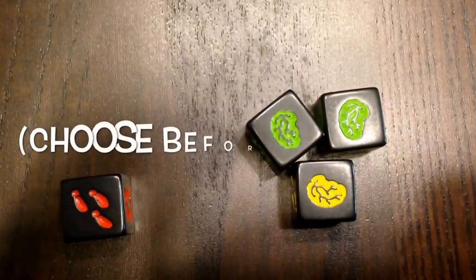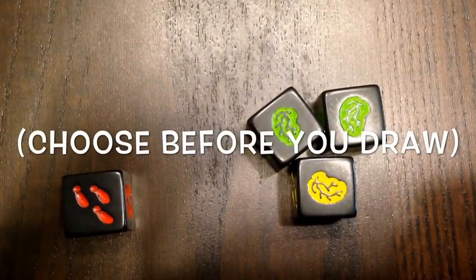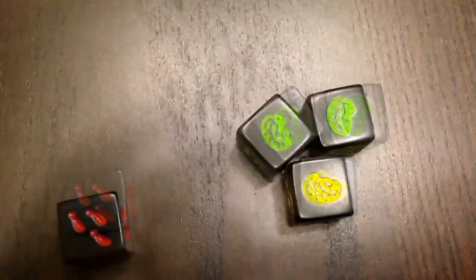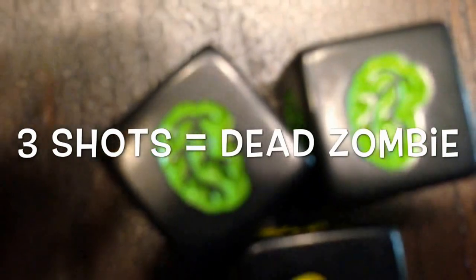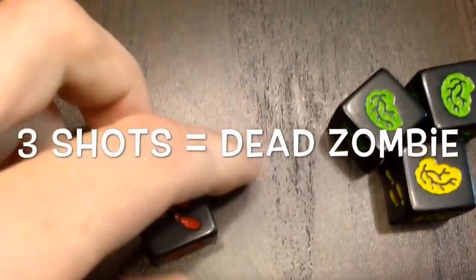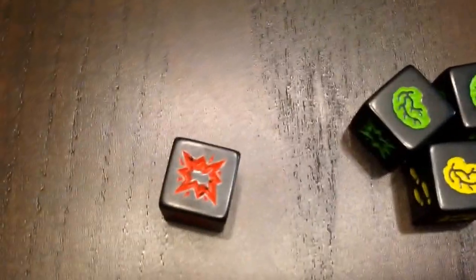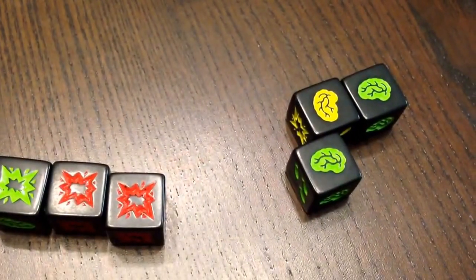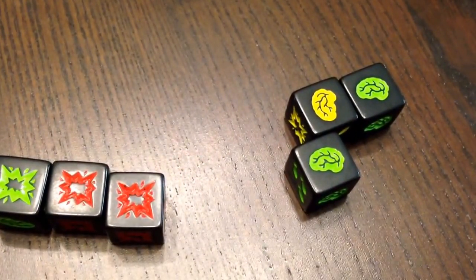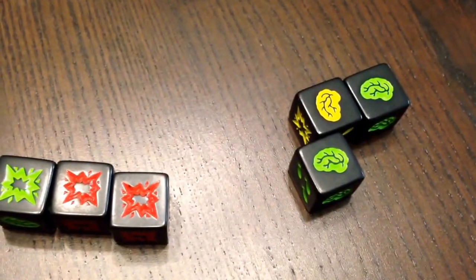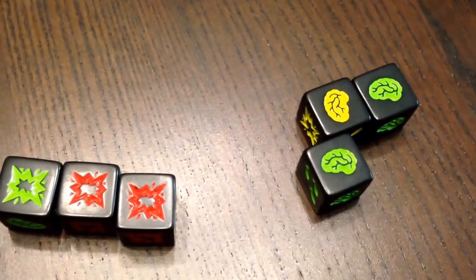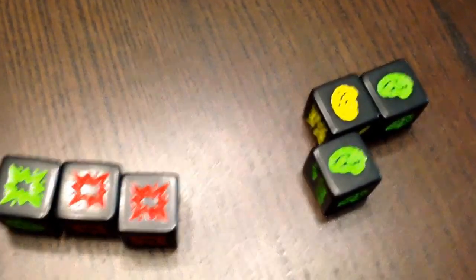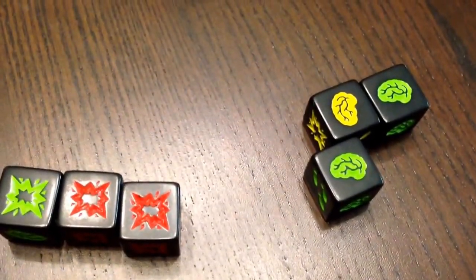The player may choose to stop in between each roll before drawing dice for that roll. The trick is to stop and get all the brains before getting up to three shots. Once the player gets three shots or chooses to take their brains and pass, the next player then takes the cup, all dice go in, and they begin their roll.